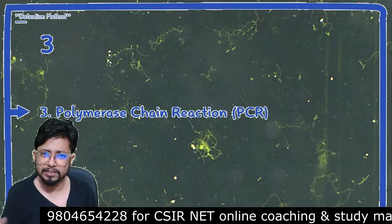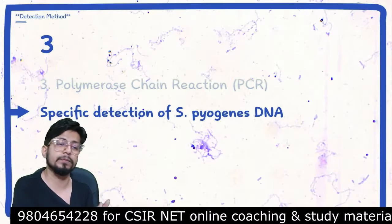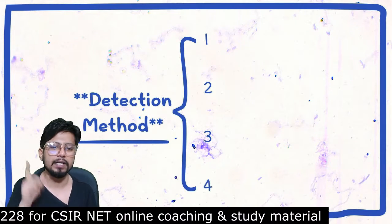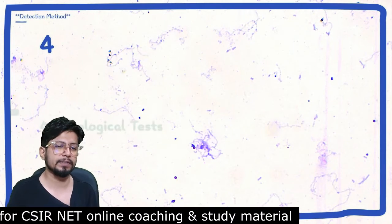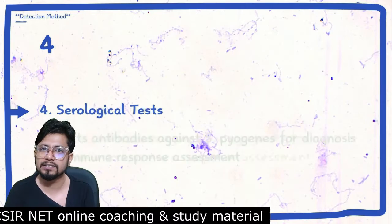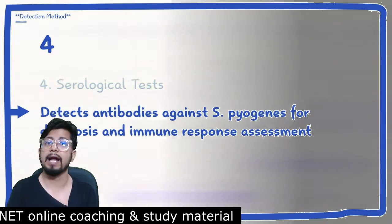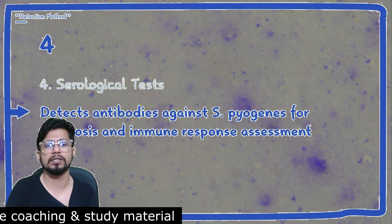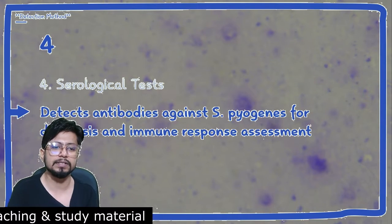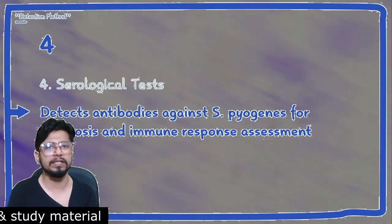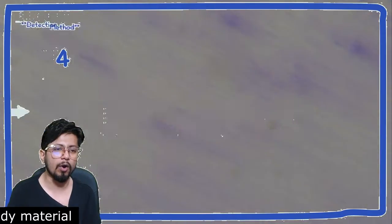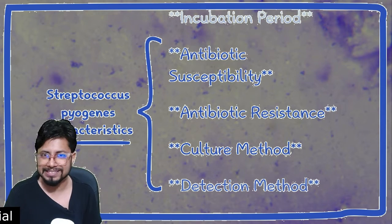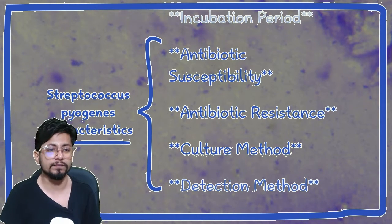The third detection method is polymerase chain reaction (PCR), which provides specific detection of Streptococcus pyogenes DNA, though it is more time-consuming. The fourth method is serological tests — confirmatory and quantitative tests that detect antibodies against Streptococcus pyogenes for diagnosis and immune response assessment of the infected person.